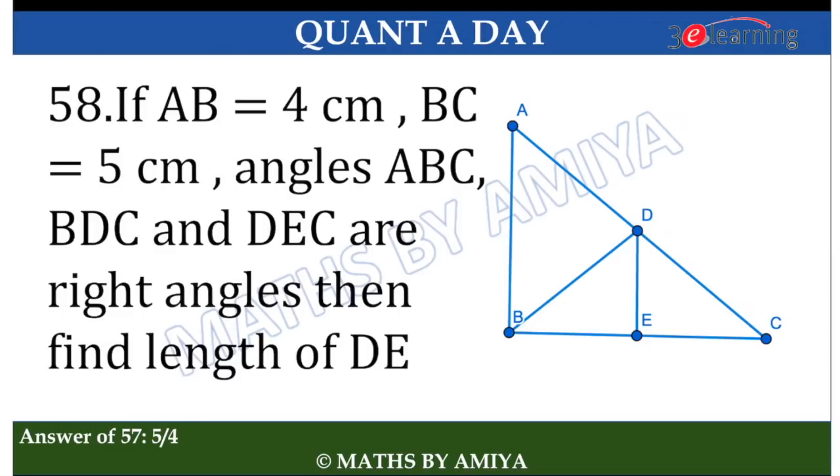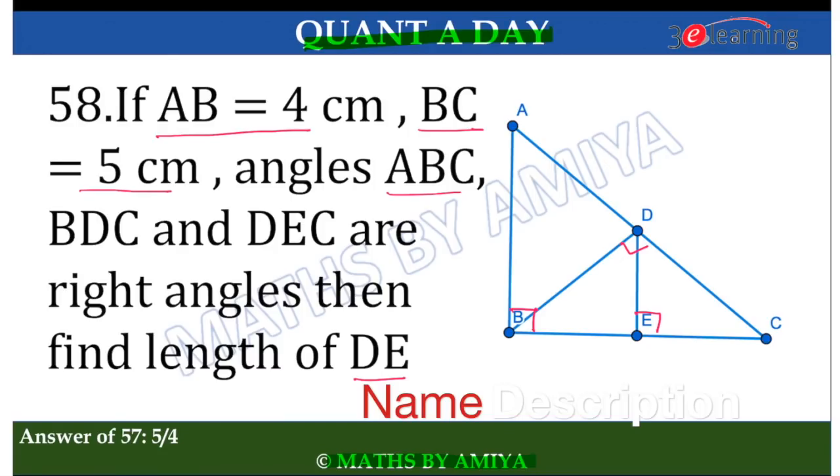Hello friends, welcome again to the world of Maths by Amya. This is again time for Quanta Day question. If AB equals 4 centimeters, BC equals 5 centimeters, angles ABC, BDC, and DEC are right angles, then you need to find the length of DE.